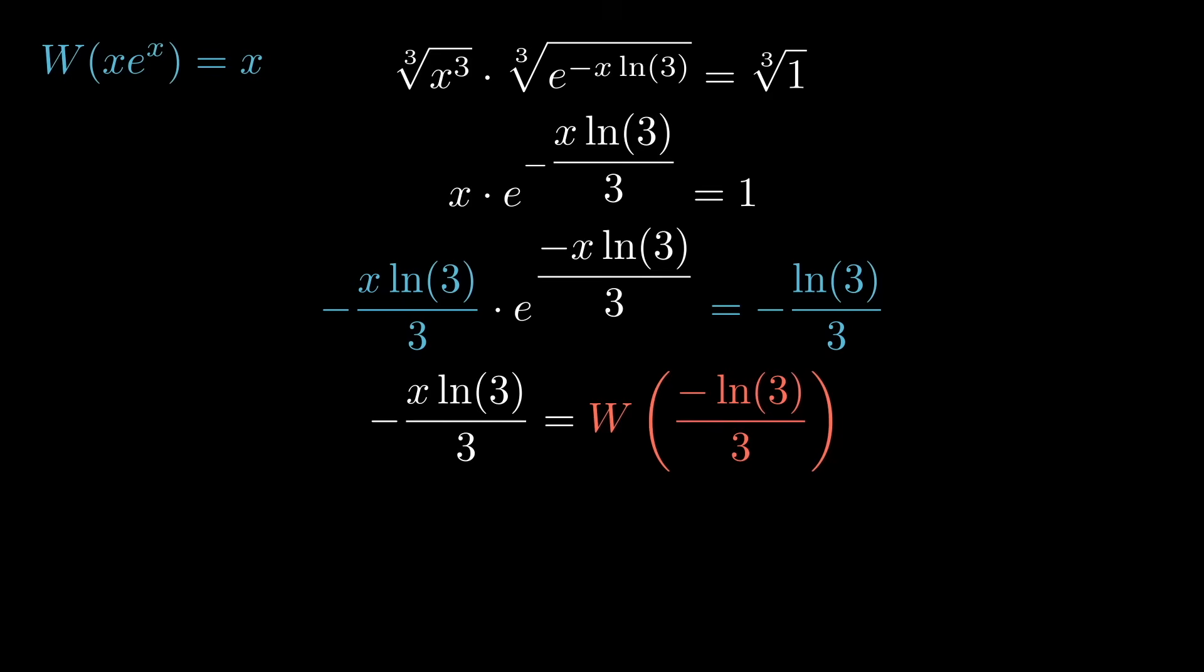Meaning that when we compose them, they essentially undo each other and just spit out the argument. In this case, w undoes the left-hand side and just leaves us with the argument minus x ln 3 over 3.